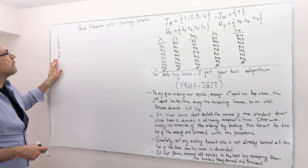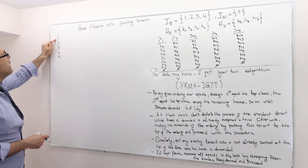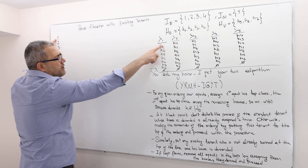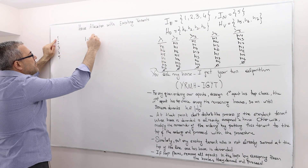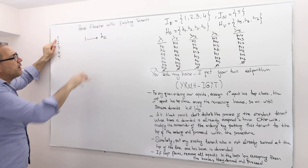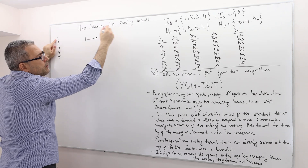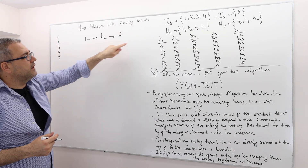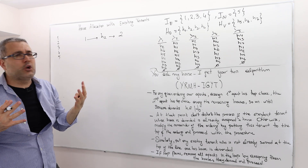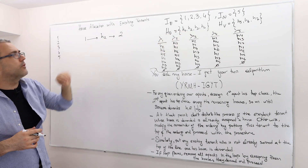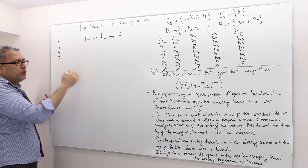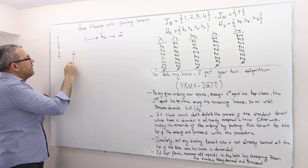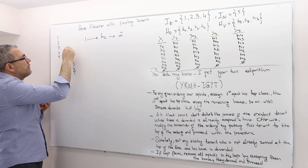Under this ordering, we ask the first agent which house they want the most. Agent 1 says house 2. House 2 belongs to individual 2, who has not been served yet and currently occupies house 2. So we move agent 2 on top of agent 1, and everything else stays the same. This becomes our new ranking.